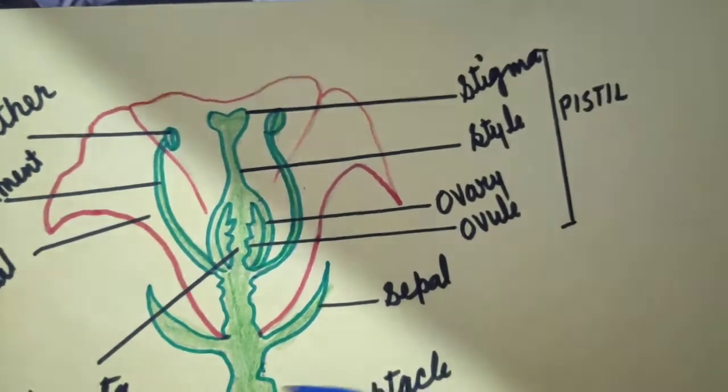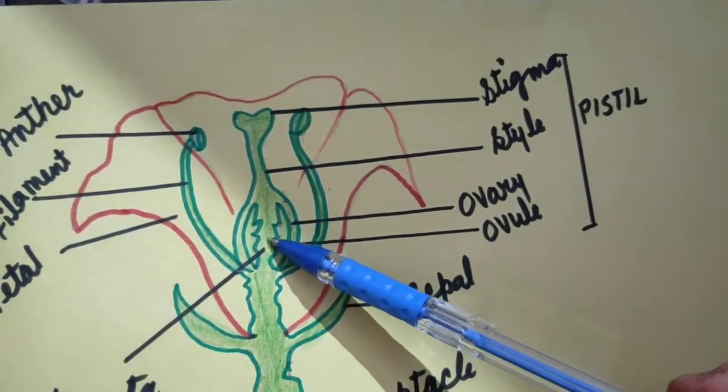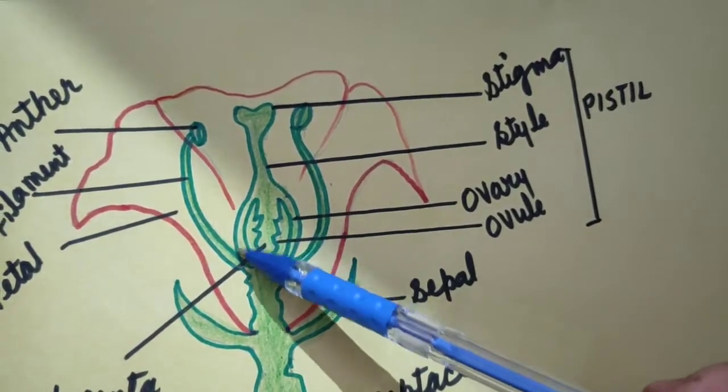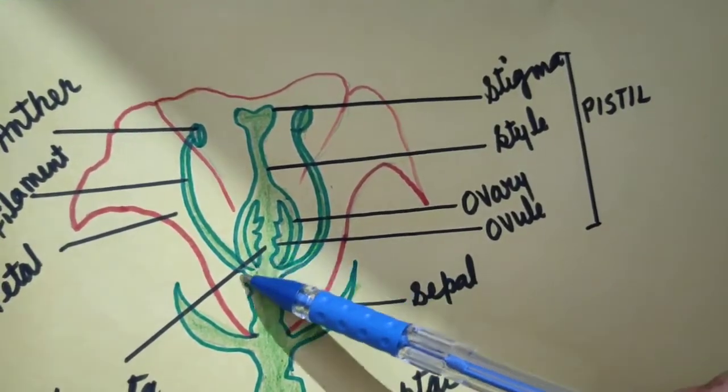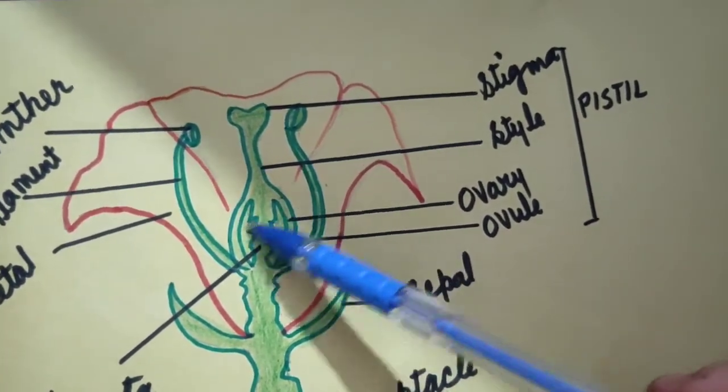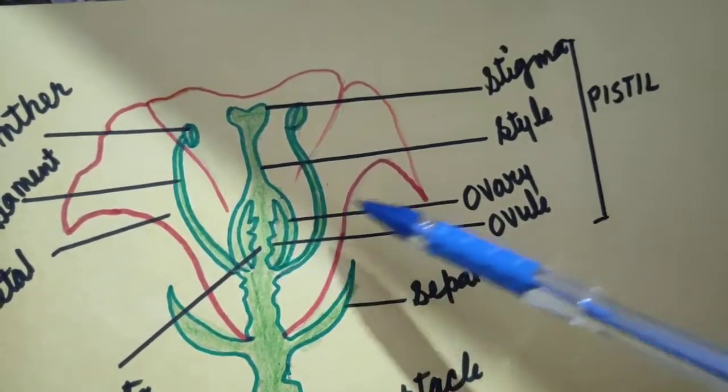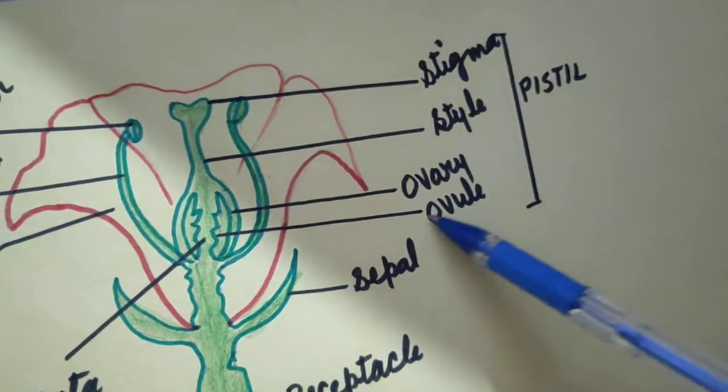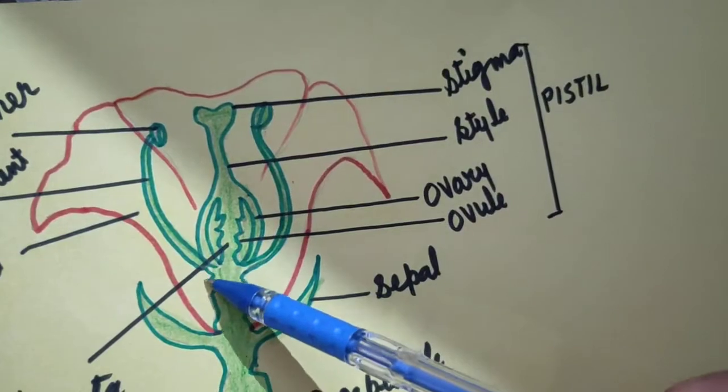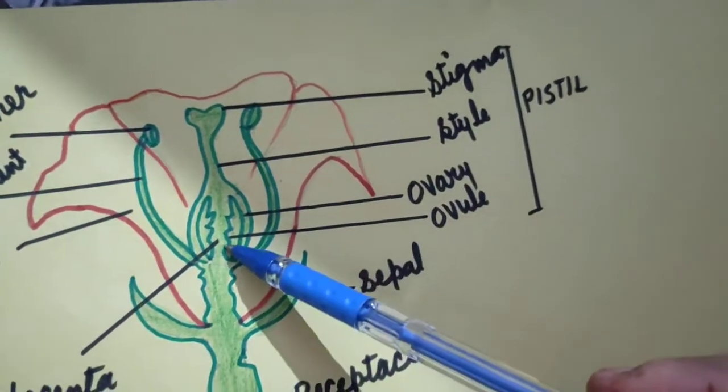Then ovary. See the structure. It is the swollen and basal portion. And the inner cavity of the ovary may be single chamber or divided into several chambers. You can see here, locules are there, each containing a number of rounded bodies. And these rounded bodies are ovules. And this region in the ovary that gives rise to ovules is known as placenta.